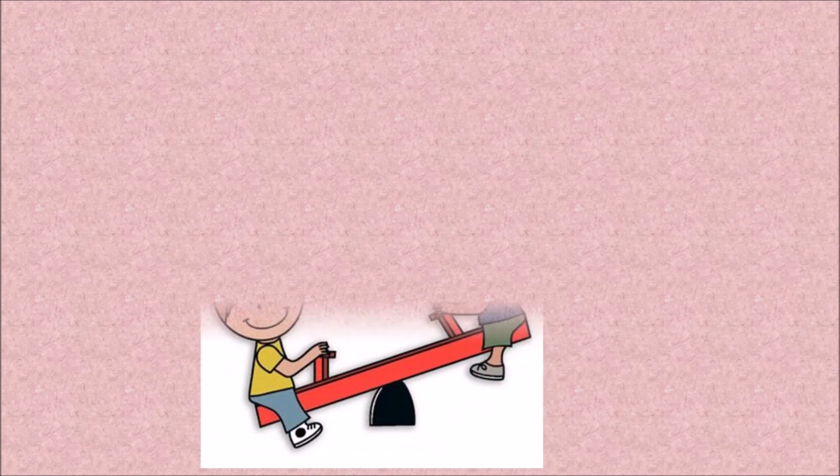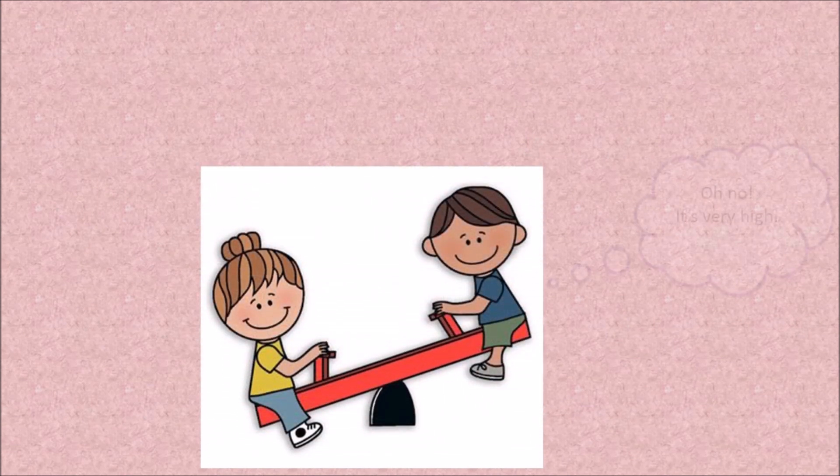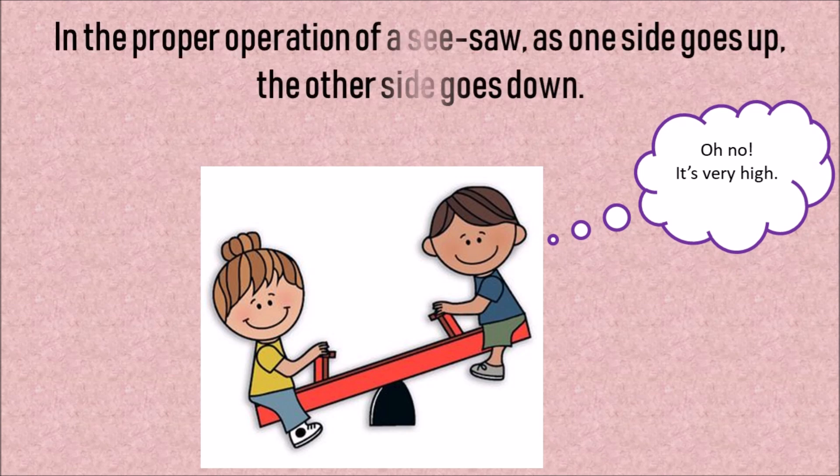After class, students always stop by in the park to play seesaw. One side goes up and the other side goes down. This shows another situation of inverse variation.